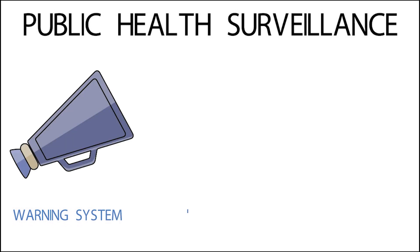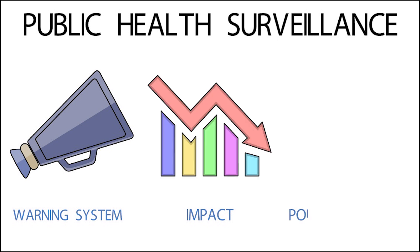Public health surveillance can serve as an early warning system for impending public health emergencies, a way to document the impact of an intervention or track progress towards specified goals, and a means to monitor and clarify the epidemiology of health problems to allow priorities to be set and to inform public health policy, funding and strategies.